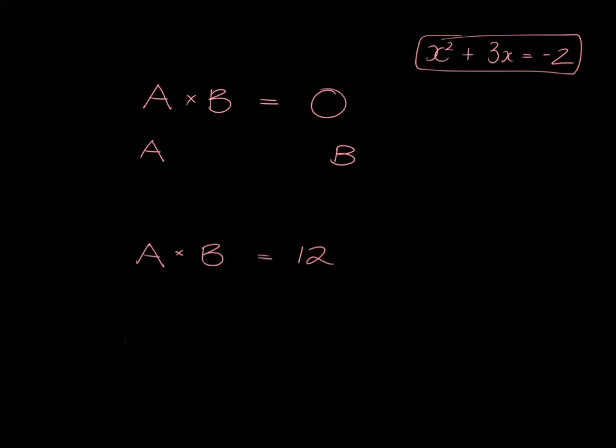So if you know that a times b gives you zero, you know that either a is zero, or you know that b is zero. And that's a very special property of zero. That is very important.